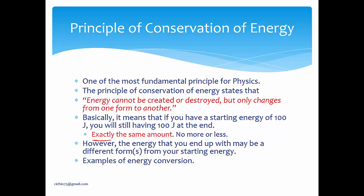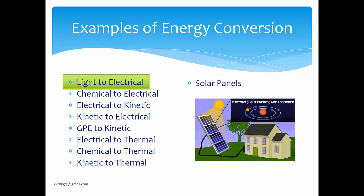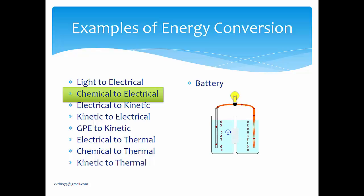Here are some examples of energy conversion. For example, light to electrical — the best example is solar panels. Solar panels take energy from the sun, which is light, and convert it into electrical energy. Chemical to electrical is also very common, which is the battery. A battery utilizes chemical reactions within itself to push electrons and generate electricity.